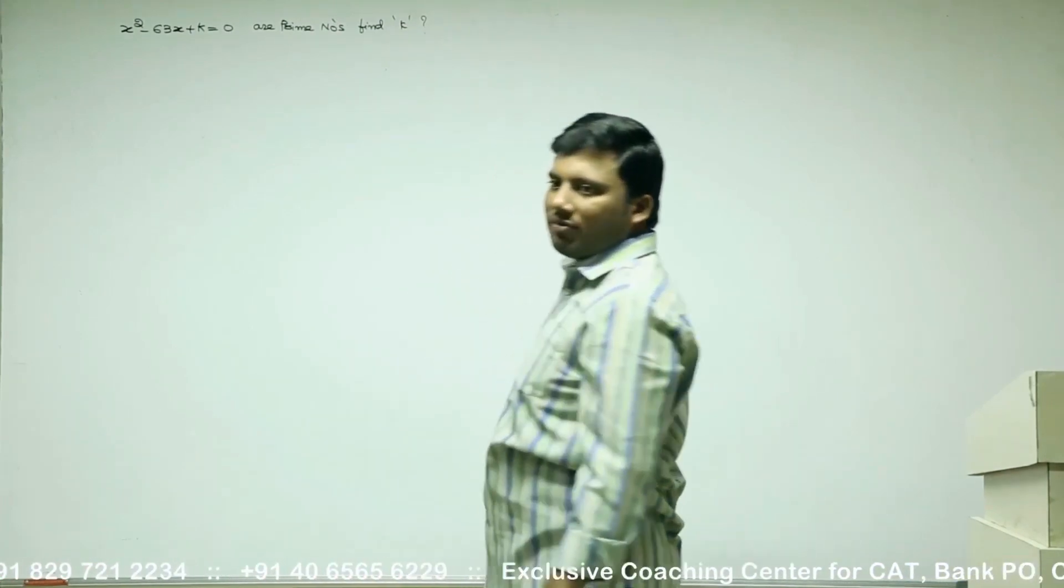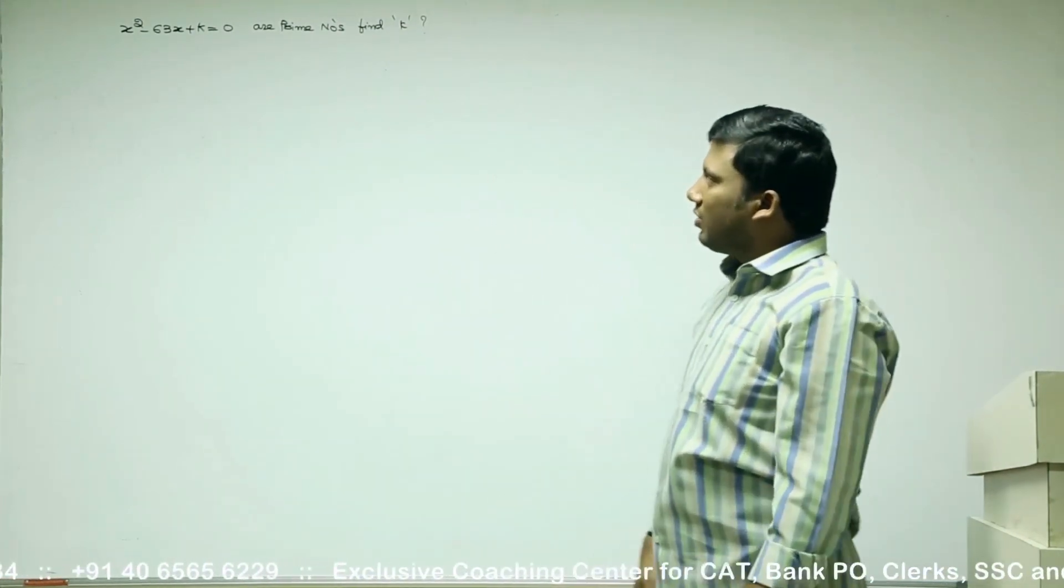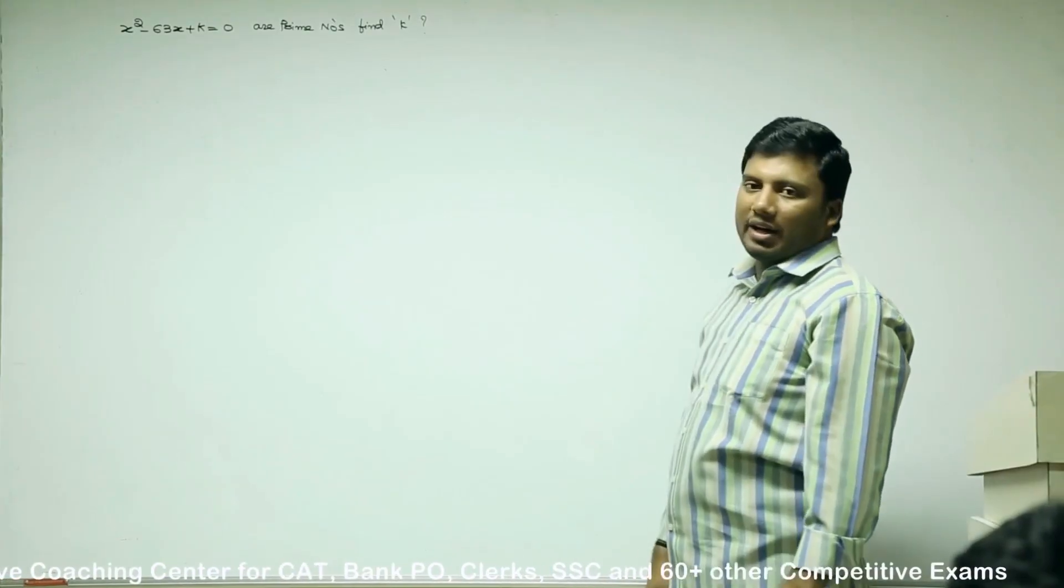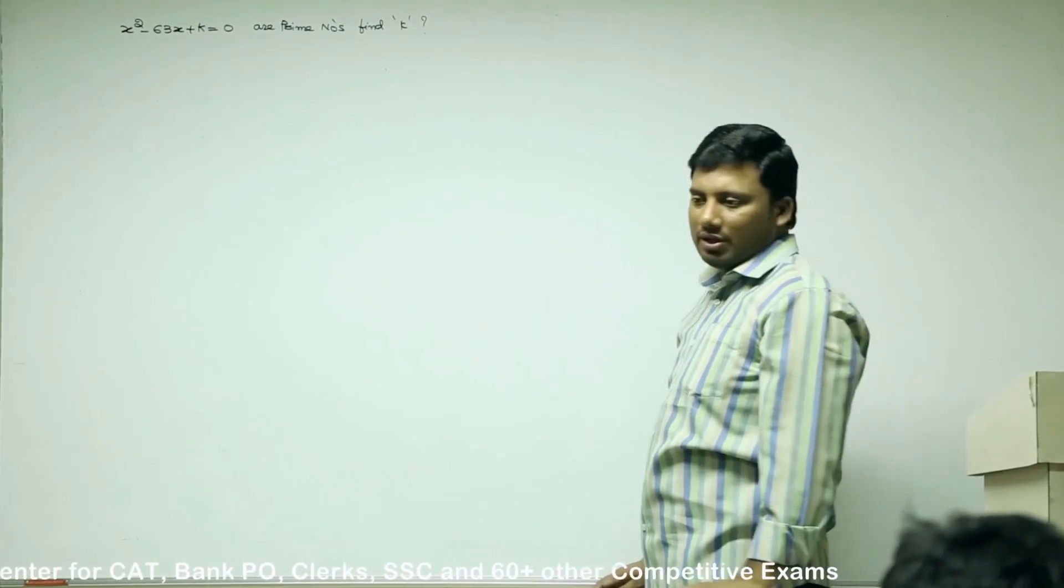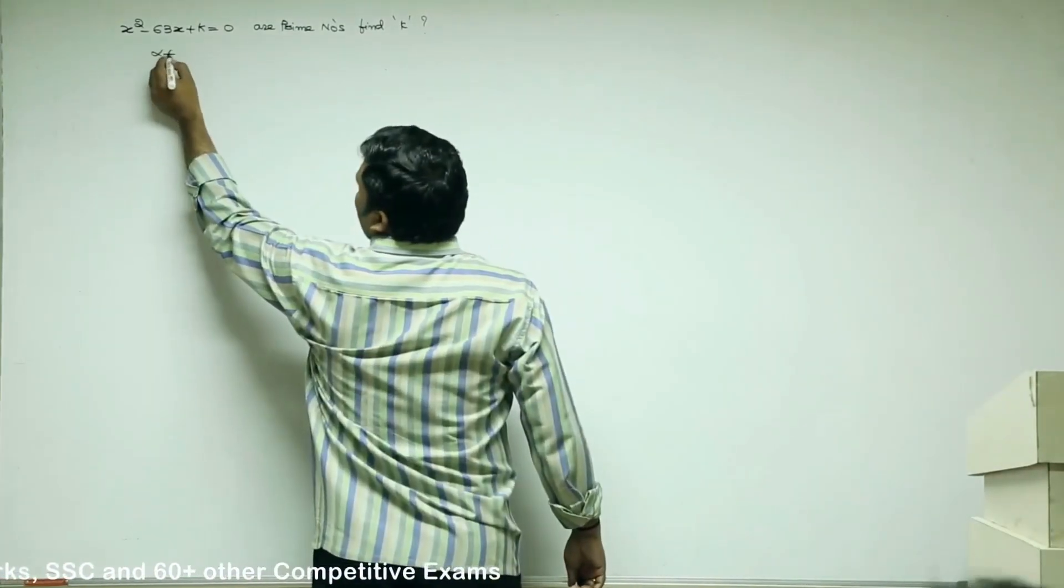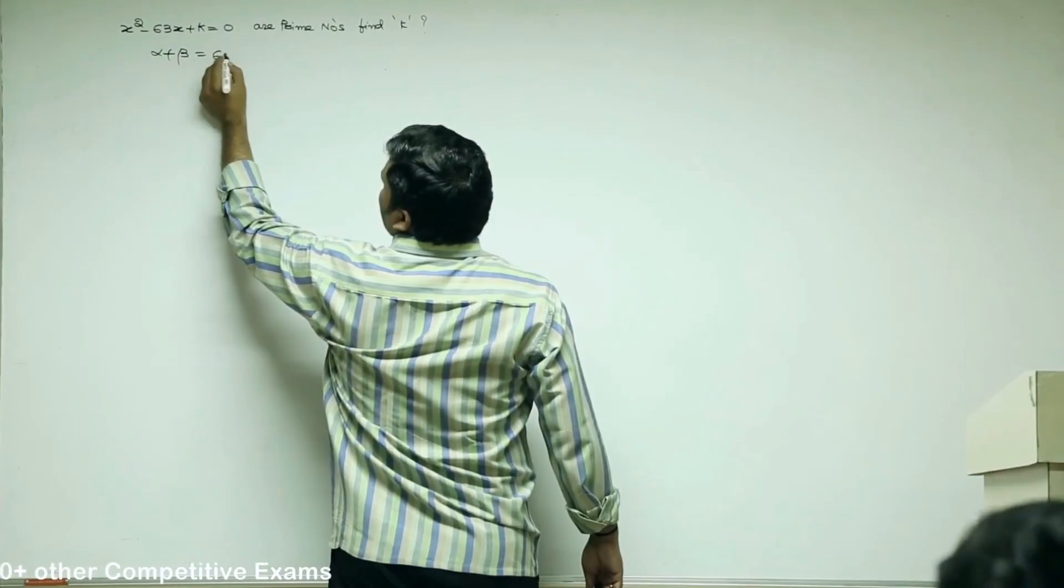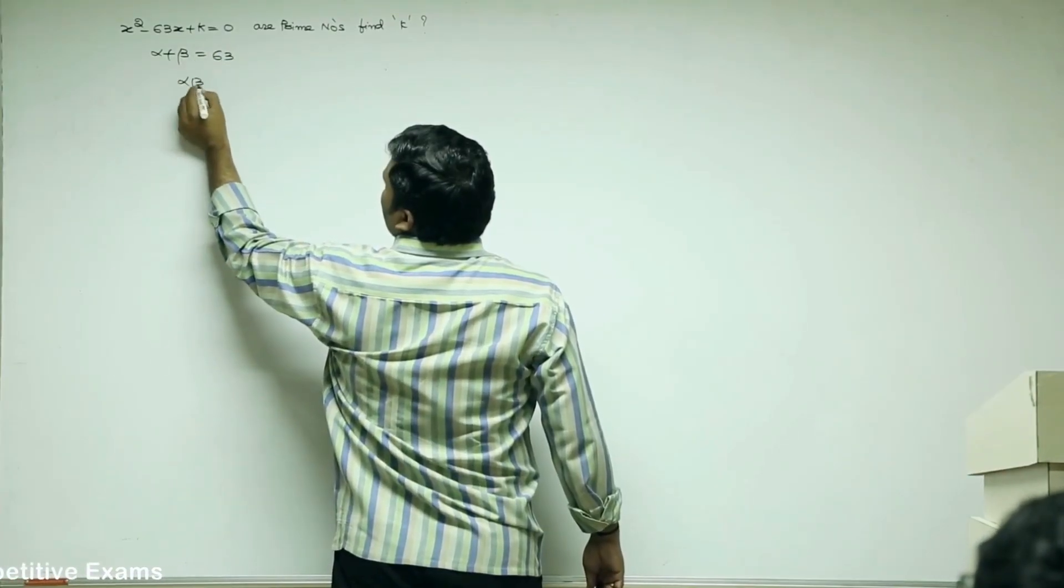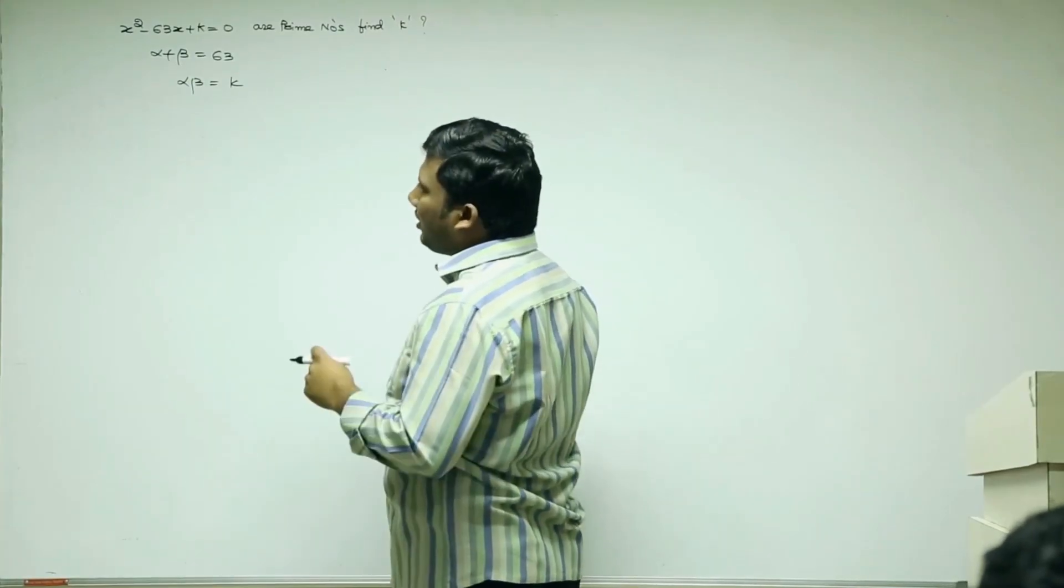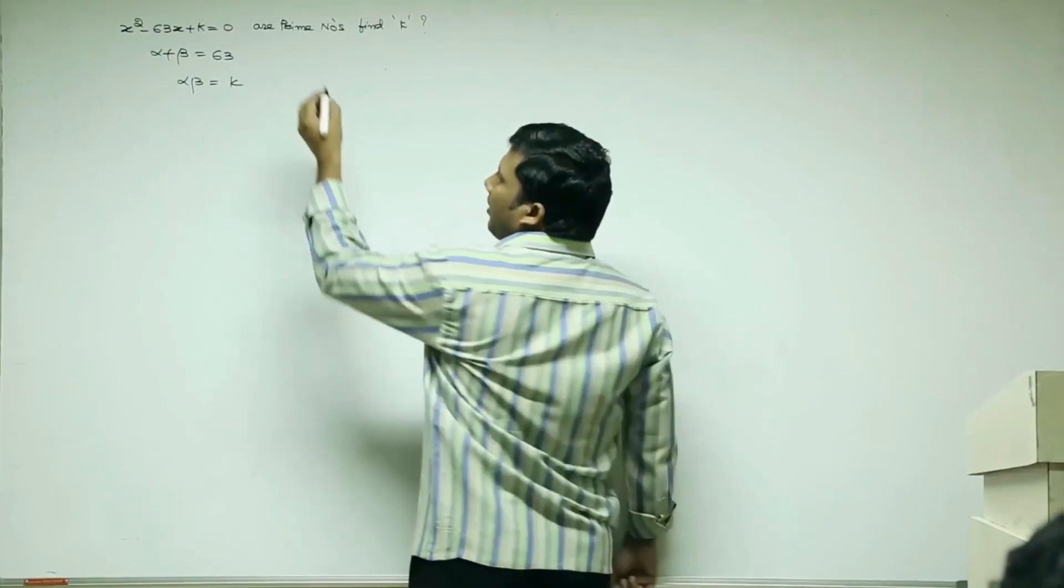Both the roots of the quadratic equation x square minus 63x plus k equal to 0 are prime numbers. Sum of the roots is 63. Product of the roots is given by c by a which is k. Both roots are prime numbers.